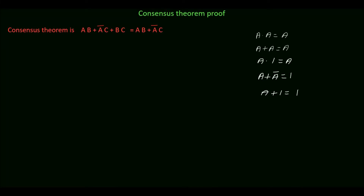In this tutorial we will prove the consensus theorem. This theorem states that if we have a variable in one product term and the complement of that variable in another product term, and the third product term has the remaining variables from those two product terms, then the third product term is redundant and can be eliminated for simplification. The theorem is: AB + A'C + BC = AB + A'C.